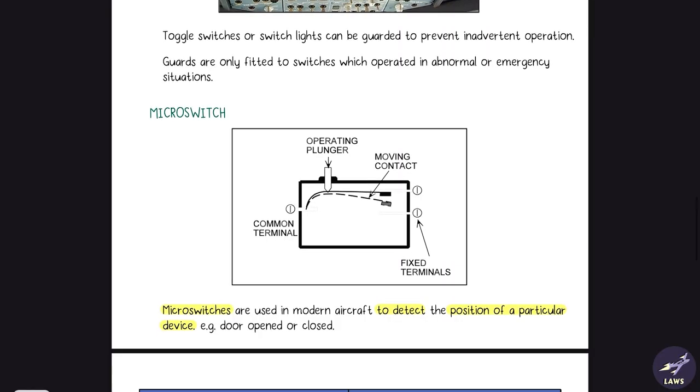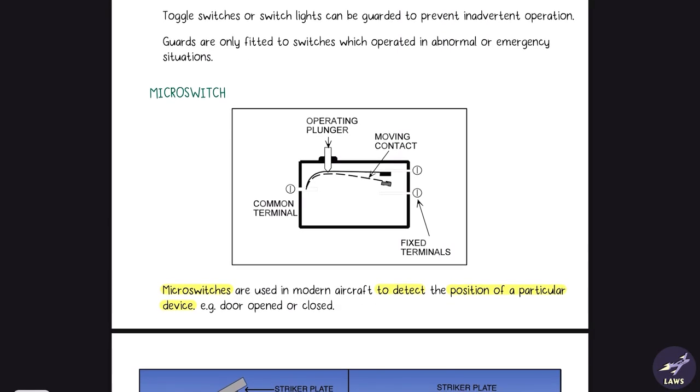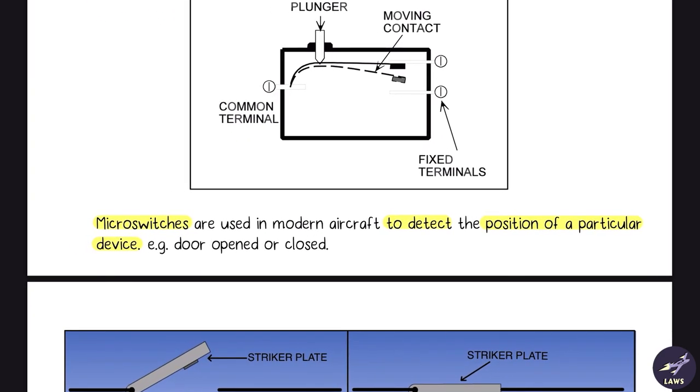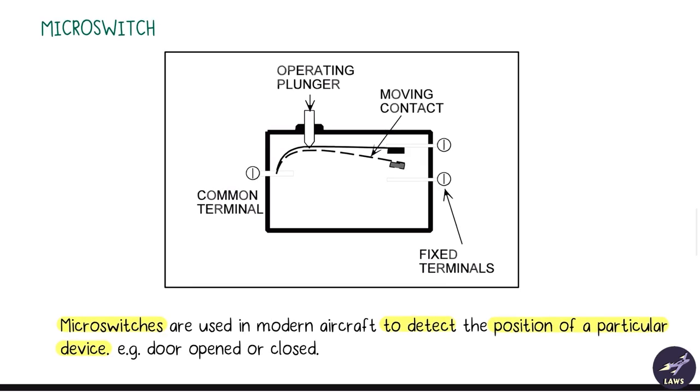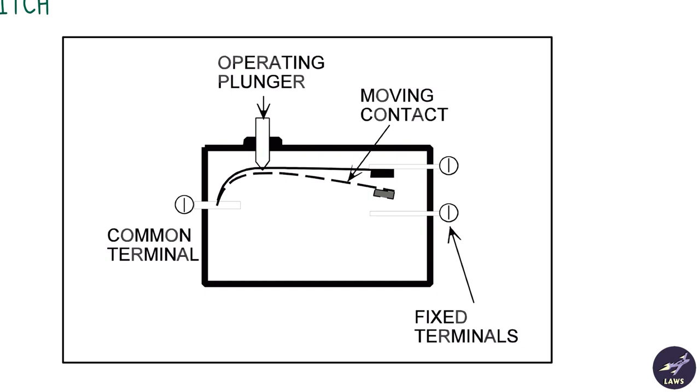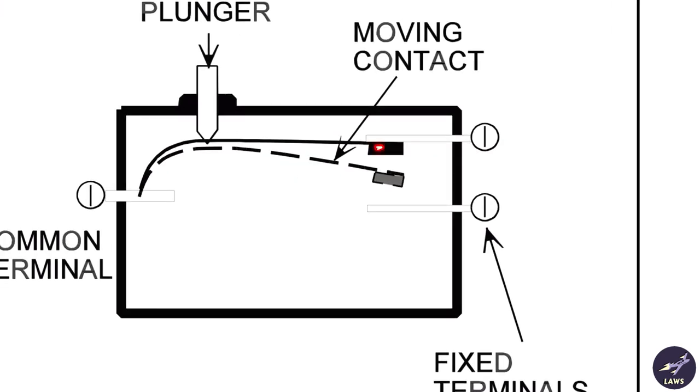Next we have micro switches. They are used to detect the position of a particular device, for example doors. In older aircraft they were used to detect the position of landing gear, whether the gear was up or down. Basically it has an operating plunger which can move up and down, and depending on the position of the plunger these contacts can move. If the contact is up it gives one indication, if the contact is down it gives another indication.